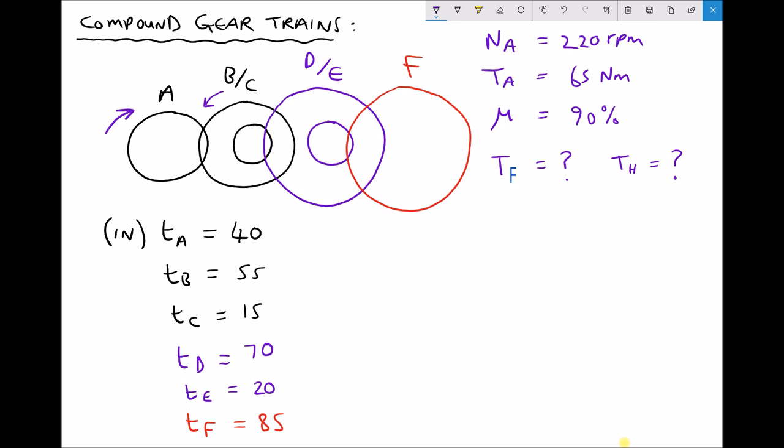Now the same is true of D and E. They're mounted on the same shaft, they're fixed together. Therefore the rotational speed of D is going to equal the rotational speed of E.